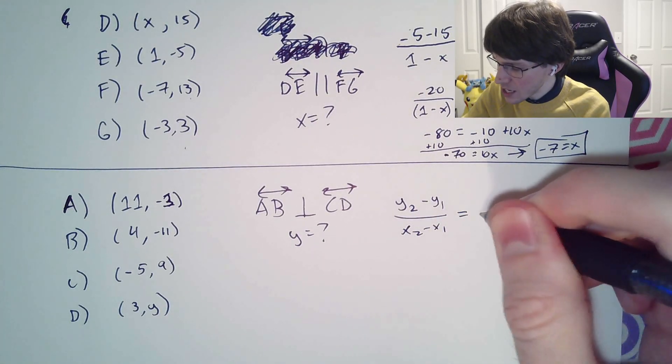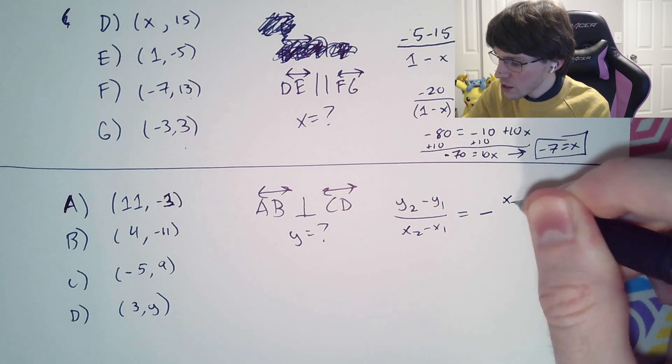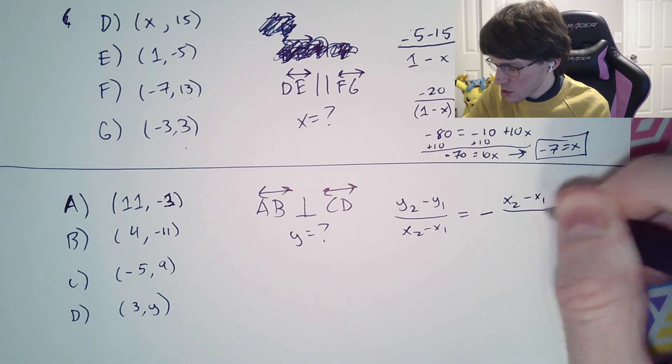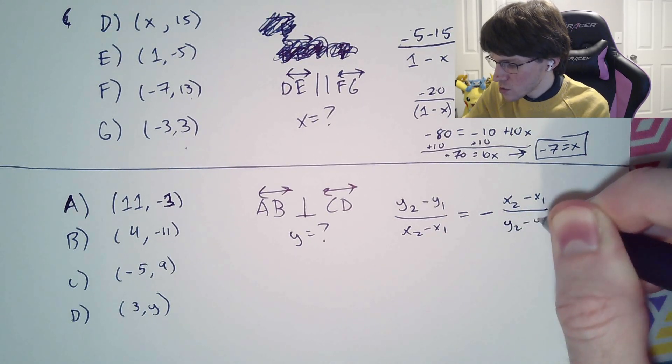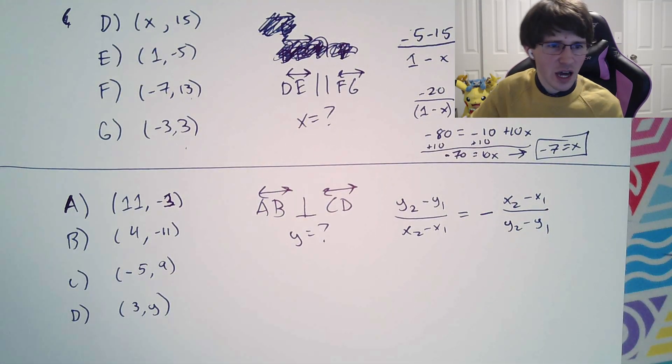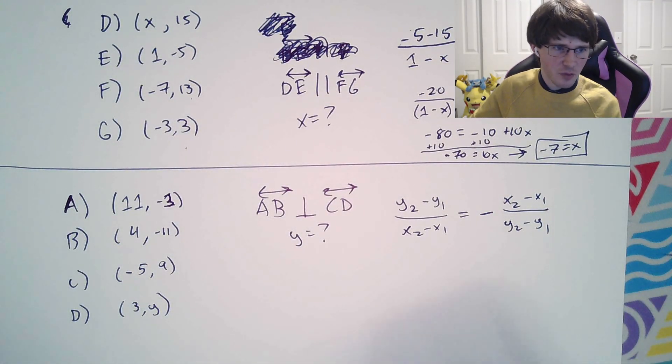So on one of them, you'll have y2 minus y1 over x2 minus x1. But on the other side, you're going to have a negative of, and now you're going to flip it upside down, x2 minus x1 over y2 minus y1. So it's kind of got to flip it upside down and figure it out.